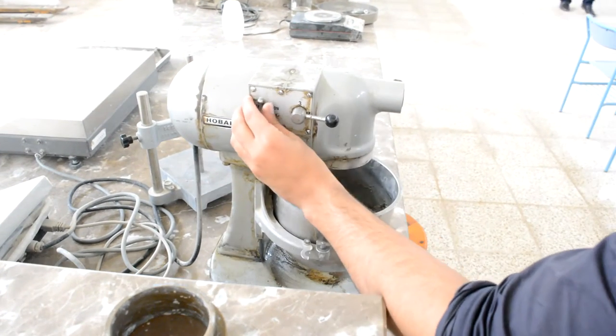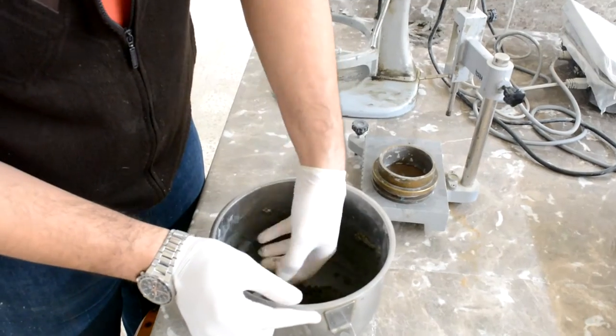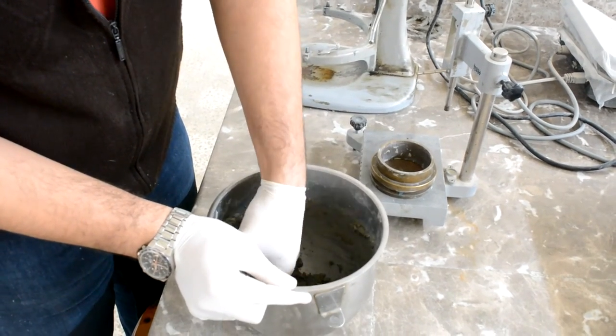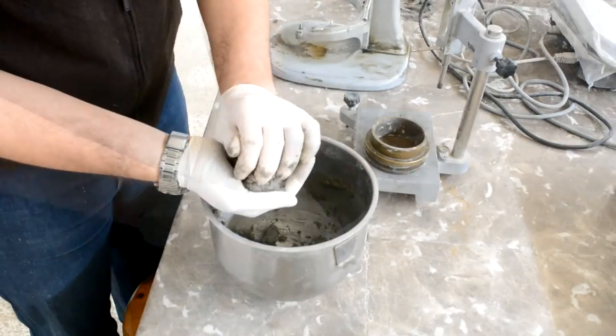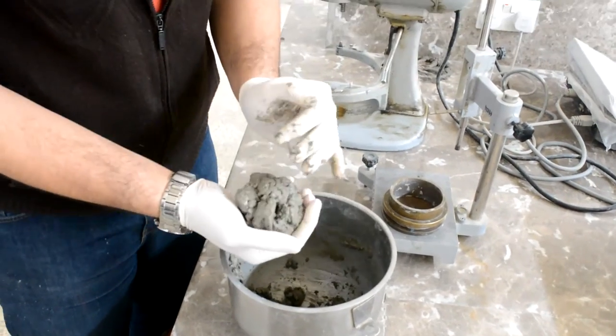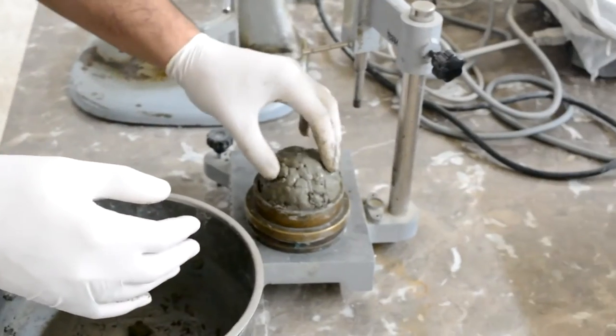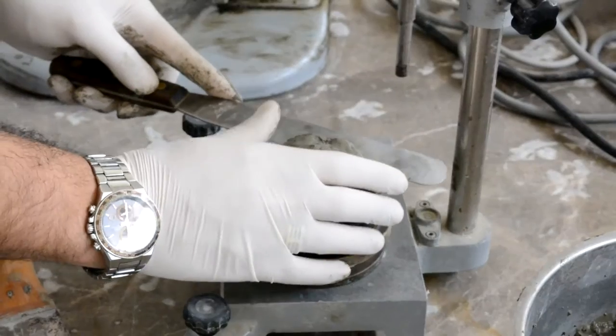Turn off the mixer, then quickly start to form a ball from the cement paste with the gloved hands. After that, toss the ball between your hands for six times.